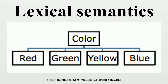Semantic fields theory asserts that lexical meaning cannot be fully understood by looking at a word in isolation, but by looking at a group of semantically related words. Semantic fields can refer to any relationship in meaning between lexemes, including synonymy, antonymy, hyponymy and hypernymy, converseness, and incompatibility. Semantic fields theory does not have concrete guidelines that determine the extent of semantic relations between lexemes, and the abstract validity of the theory is a subject of debate.